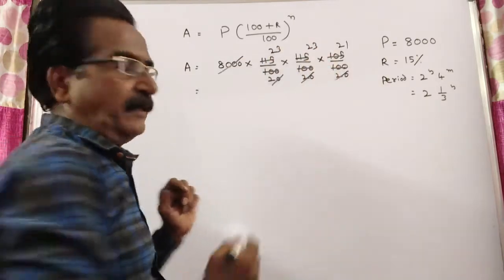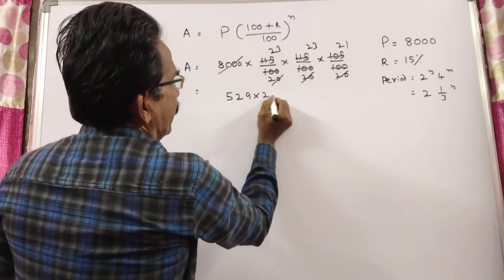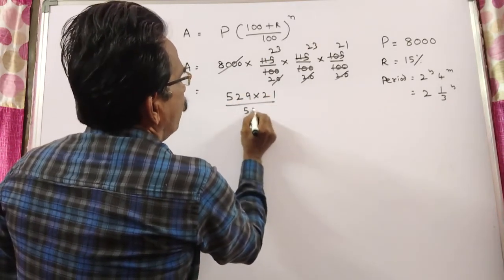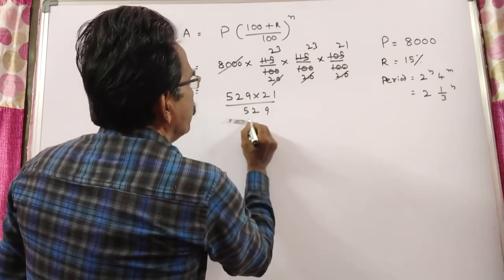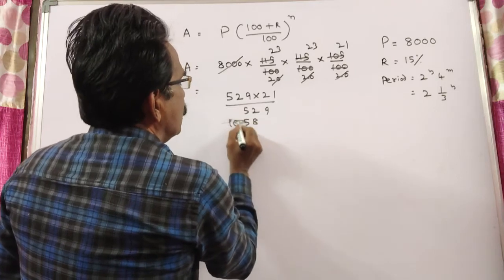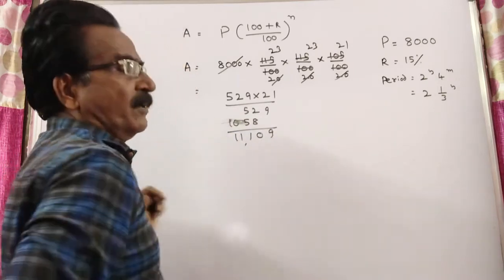Now, 23 square into 21, that is 529 into 21. 529, 10058. So, 11,109,